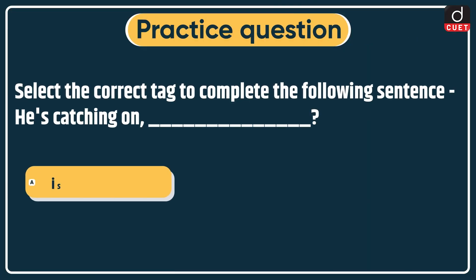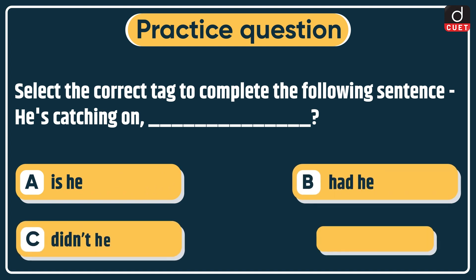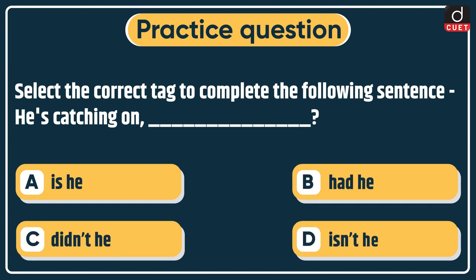Now it's time for the practice question. Select the correct tag to complete the following sentence: 'He is catching on, ___?' Options: is he, had he, didn't he, or isn't he? Send the answer of this question in the comment section. Stay tuned for the next episode. Thanks for watching.